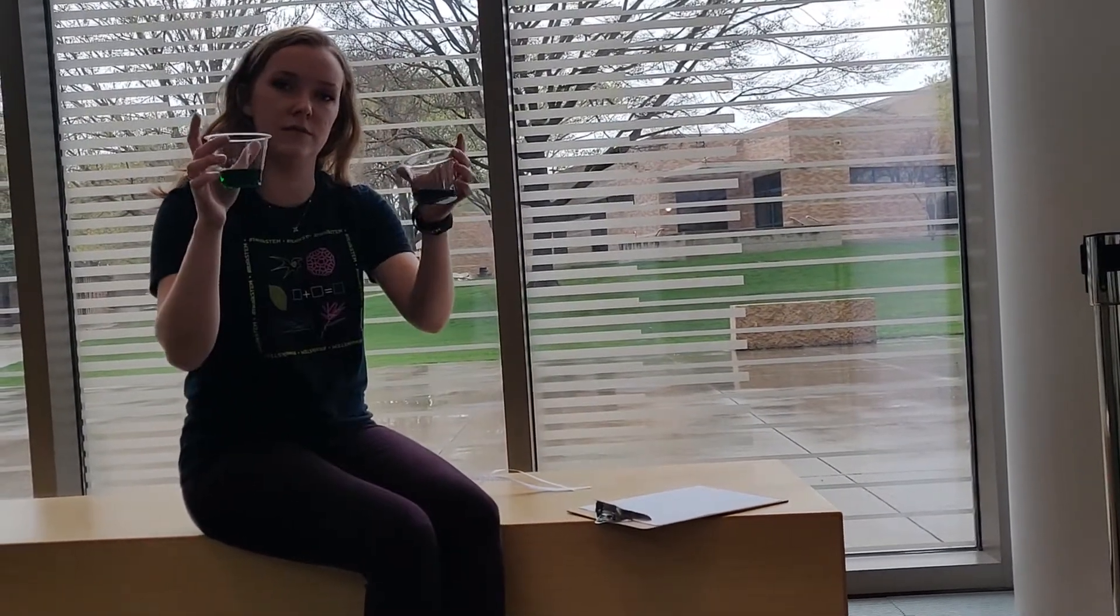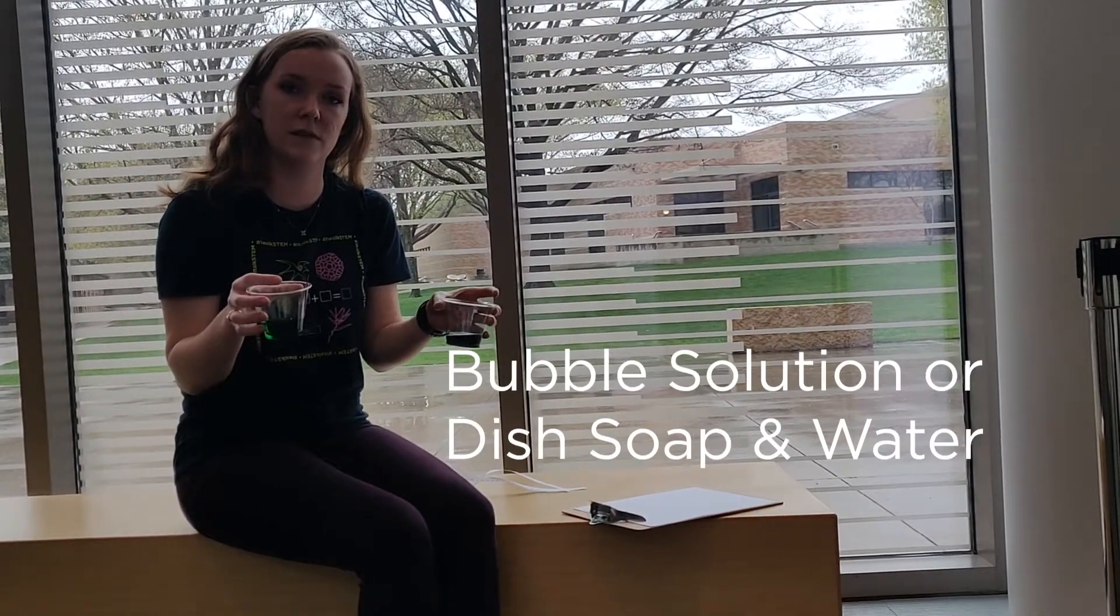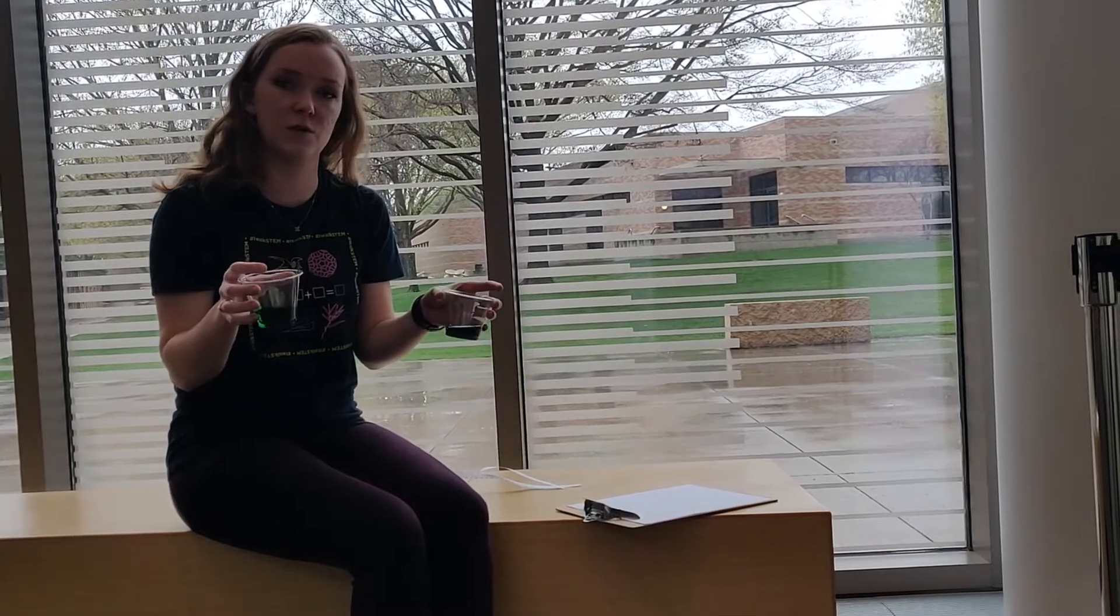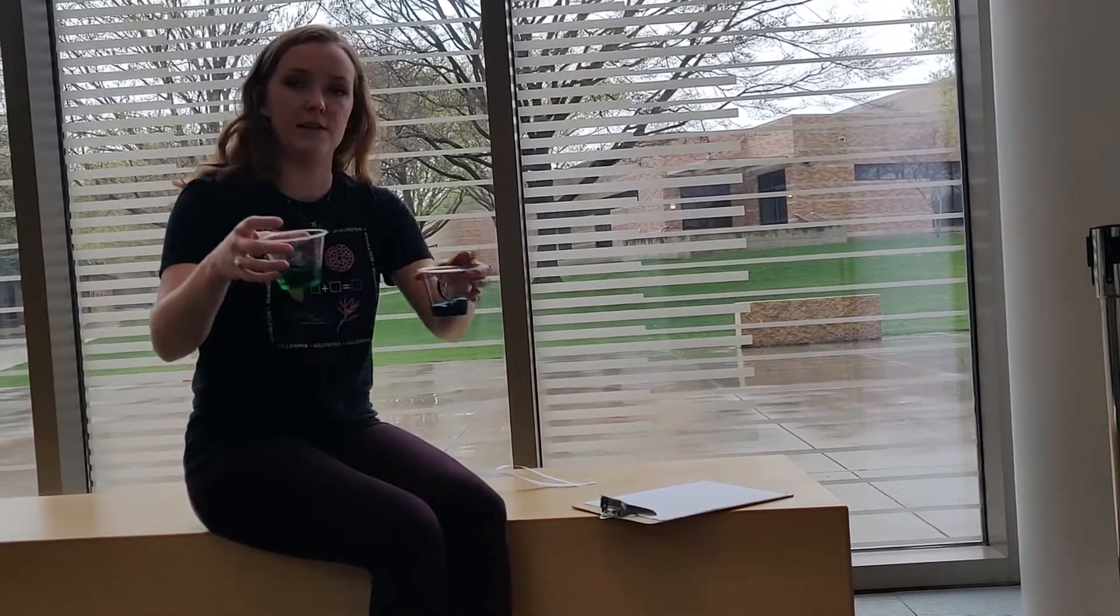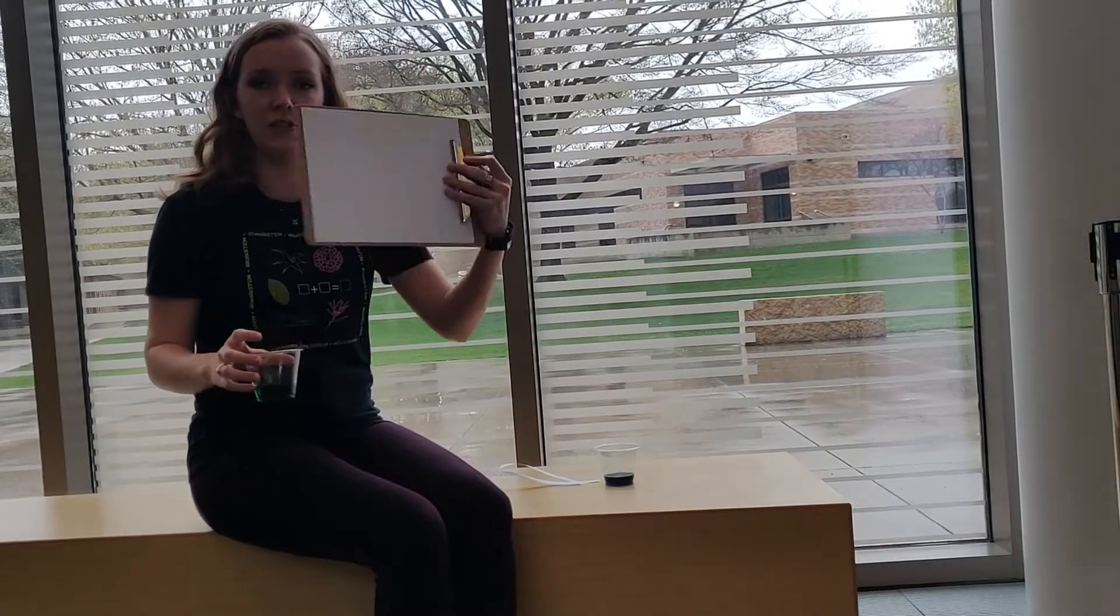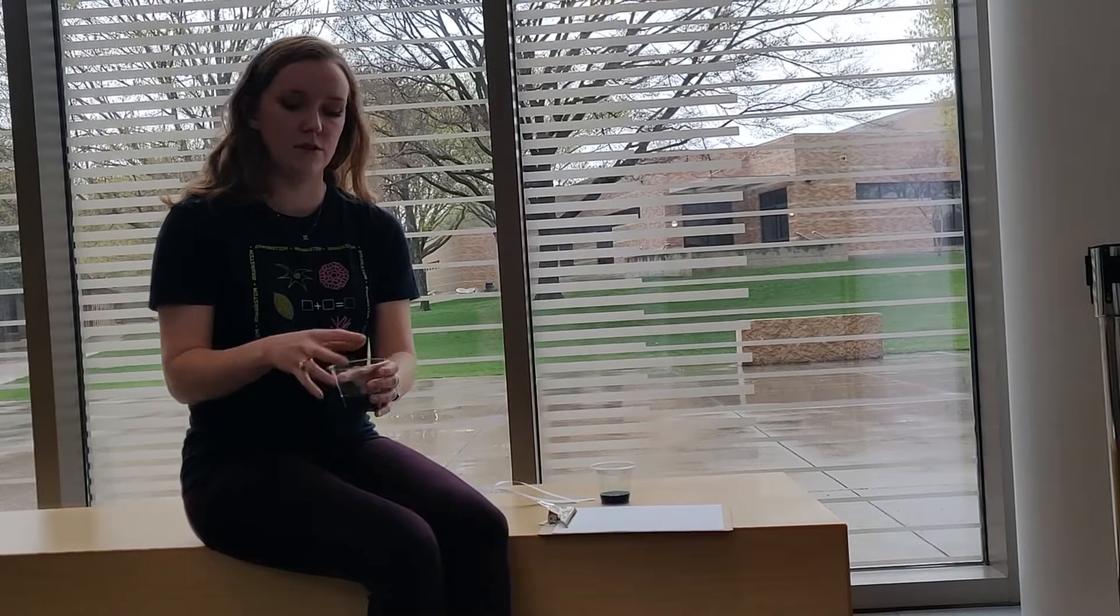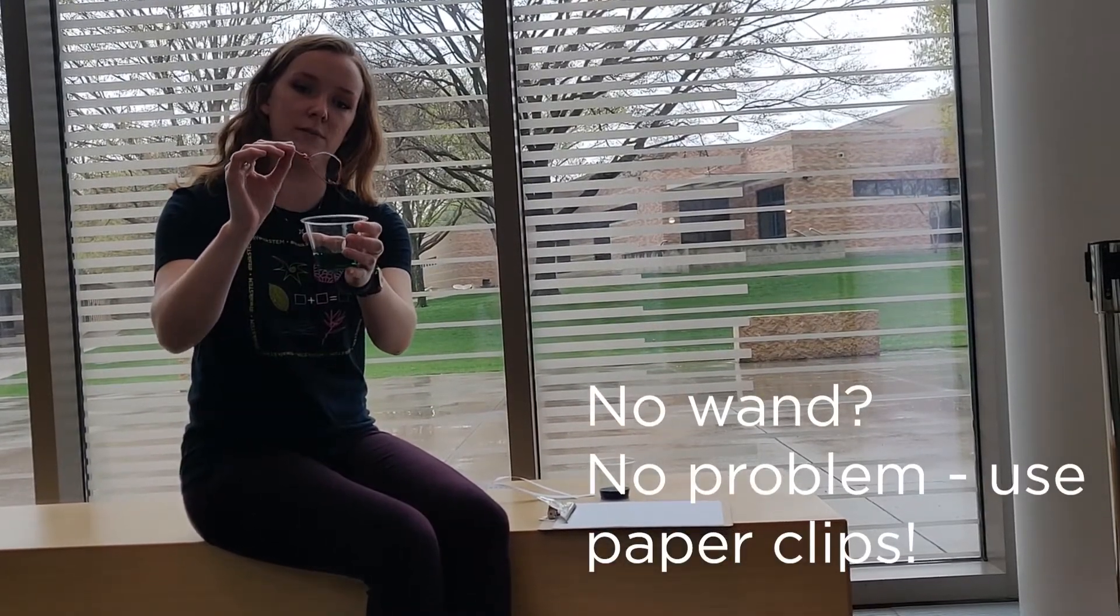This is something that you can do at home. I have two mixtures of bubble solution here. If you don't have bubble solution, you can just mix a part of dish soap with water, and I added some food coloring so we can see the bubbles. You just need a blank sheet of paper and a surface, and if you don't have a bubble wand, you can actually fold two paper clips to create your own bubble wand.